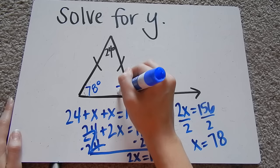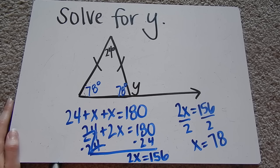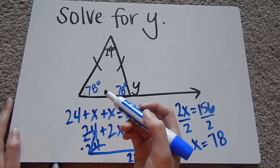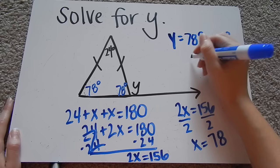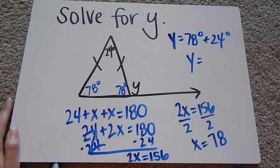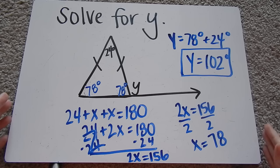Once we have these angles, we can find y two different ways. One is you can recognize this is a line. Straight lines add up to 180 degrees. So you can just use this angle to find y, or y, the exterior angle, is equal to the sum of the remote interior angles, 78 degrees plus 24 degrees. So either way would get you your answer, 78 plus 24 is going to be 102 degrees. So that is my answer. That is y.